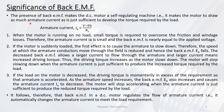Now, the significance of back EMF. The presence of back EMF makes the motor a self-regulating machine. That is, it makes the motor draw as much armature current as is just sufficient to develop the torque required by the load. The armature current is Ia = (V − Eb) / Ra. The back EMF Eb decides how much armature current flows and how much torque is developed.